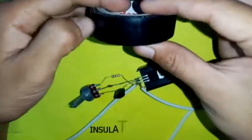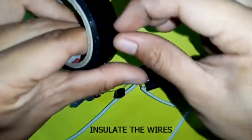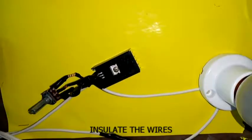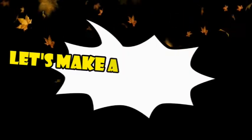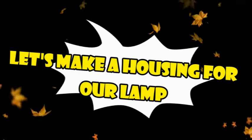Next, insulate the wires. Now that our circuit is already finished, let's try making a housing for our lamp. We will use the packaging of soap as the box for our triac and diac connections.